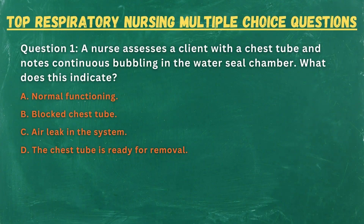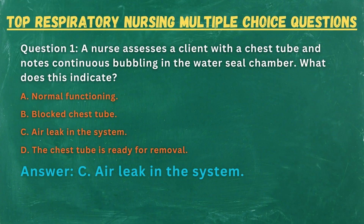Question 1. A nurse assesses a client with a chest tube and notes continuous bubbling in the water seal chamber. What does this indicate? A. Normal functioning. B. Blocked chest tube. C. Air leak in the system. D. The chest tube is ready for removal. Answer: C. Air leak in the system.